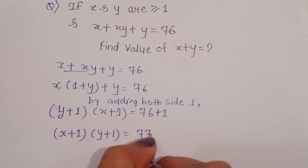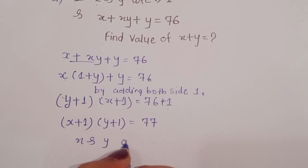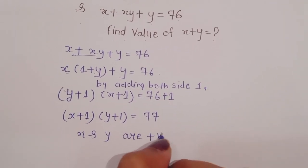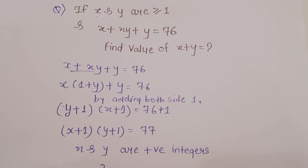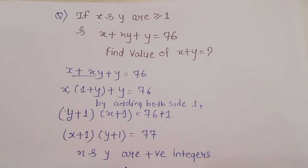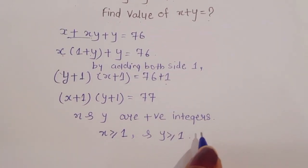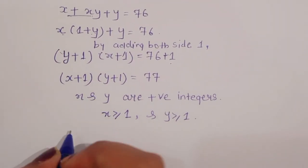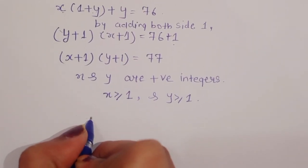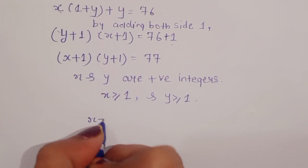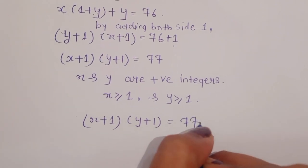Adding 1 to both sides, we get (x plus 1) into (y plus 1) is equal to 77. Now we know that x and y are positive integers as given in the question, meaning x is greater than or equal to 1 and y is also greater than or equal to 1.